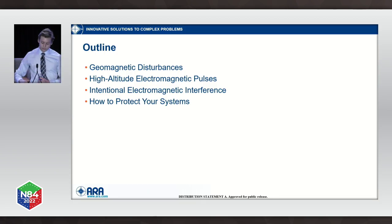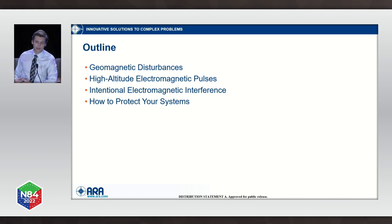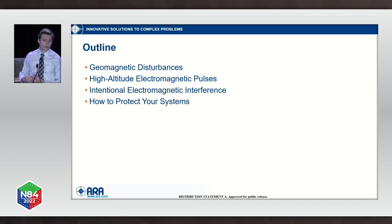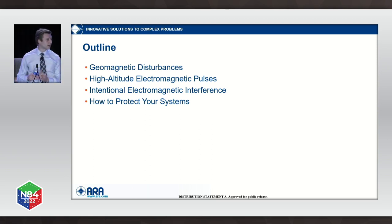The outline of this talk covers three EM threats. The first being geomagnetic disturbances. We'll move on to high-altitude nuclear detonations that give rise to electromagnetic pulses. The last one is intentional electromagnetic interference, or IEMI. And then finally, we'll talk about how you can protect yourselves and mitigate these effects.